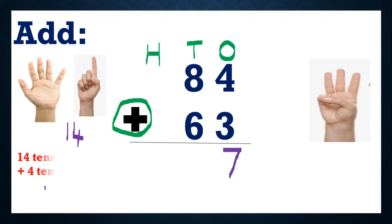So what does 14 mean? Because it's tens. So 14 tens means there are 1 hundred and 4 tens. Right, children? So 1 hundred and 4 tens means I will carry this 100 to hundreds place. And I will write this 4 in tens place.